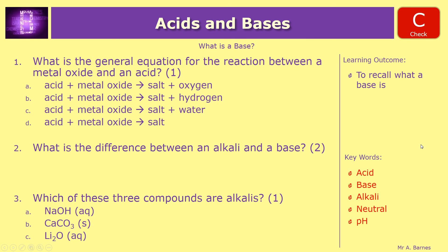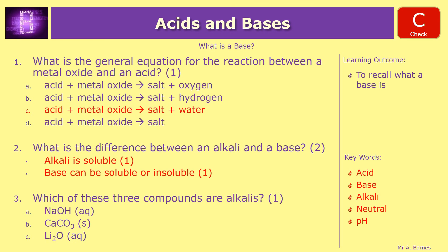Okay, hopefully you've had a go at those, so let's see if you are right. Question one: the general equation for a reaction between a metal oxide and an acid — that is salt and water only. Question two: what is the difference between an alkali and a base? Alkalis are soluble; bases can be both soluble or insoluble — for your two marks.